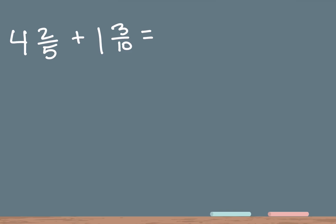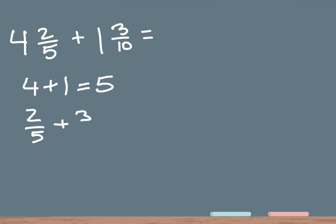We're going to take 4 plus 1, which equals 5. So that is our whole number portion. Then we're going to take the fraction portion, which is 2 over 5 plus 3 over 10.